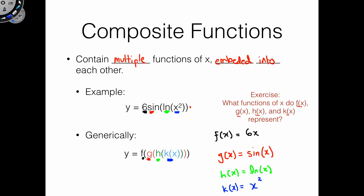Now let's look at what's really happening in this composite function. We're plugging x squared into ln of x, then plugging ln of x into sine of x, and then plugging the sine of x into 6x. So you're plugging different functions into other functions of x. That's the idea behind composite functions, and this is what the chain rule helps us solve.